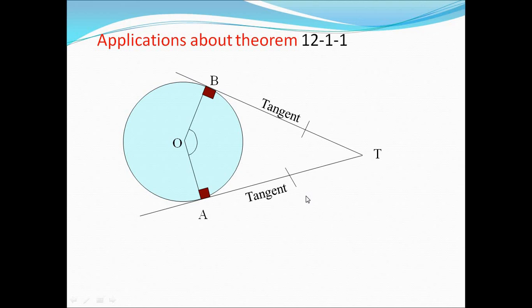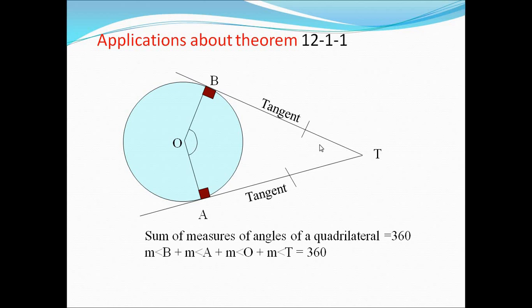What if we want to find angle O or angle T? We can see in this figure we have a quadrilateral with four sides: A, T, B, O. We know that the sum of measures of interior angles of a quadrilateral equals 360 degrees. So angle B plus O plus A plus T equals 360. Here angles A and B together give 90 plus 90 equals 180, so angle O plus angle T also equals 180.